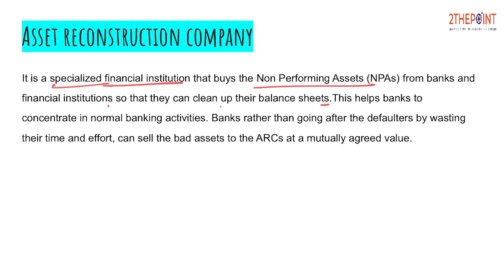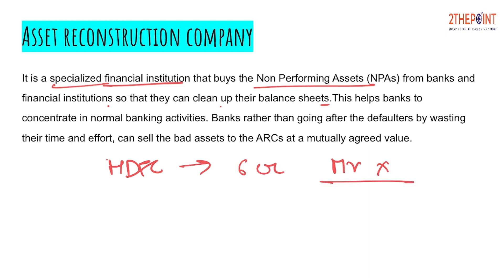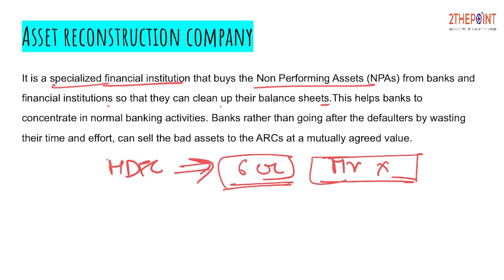Banks can sell their bad assets to ARCs at a mutually agreed value. For example, let's suppose HDFC Bank has given a 6 crore rupee loan to Mr. X. After a point of time, HDFC gets to know that this person is not ready to pay, is willfully defaulting the payment, and is in no mood to do the repayment of this 6 crore rupees. One option is HDFC goes to the defaulter and enters negotiation or goes into civil proceedings to get the money out of Mr. X.